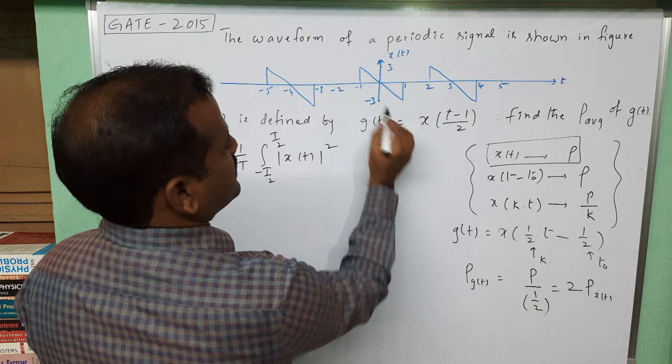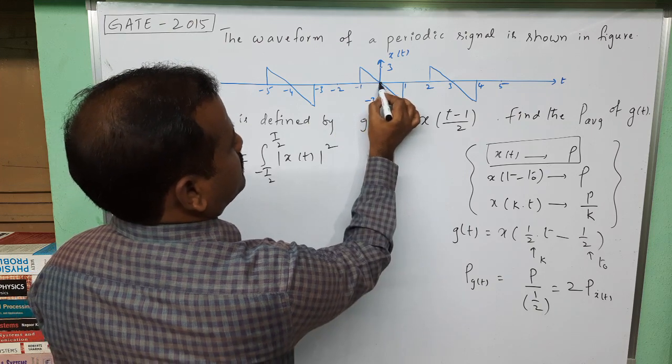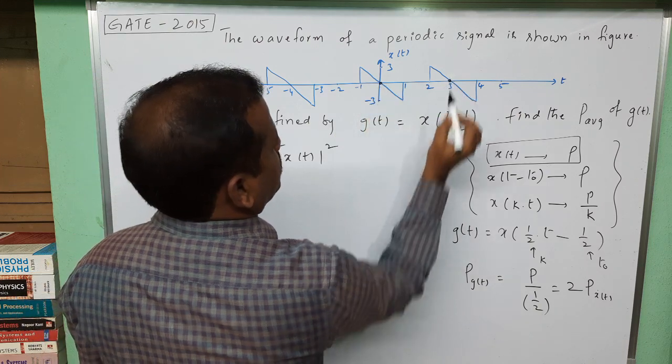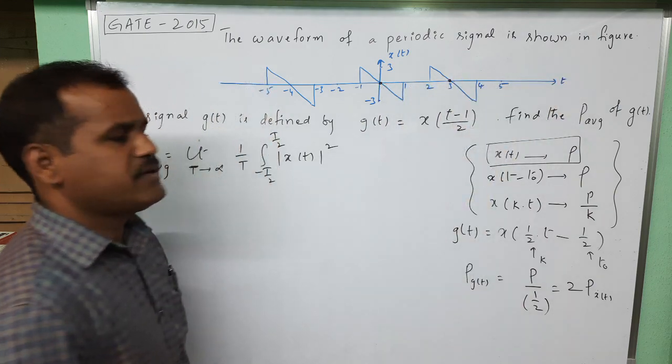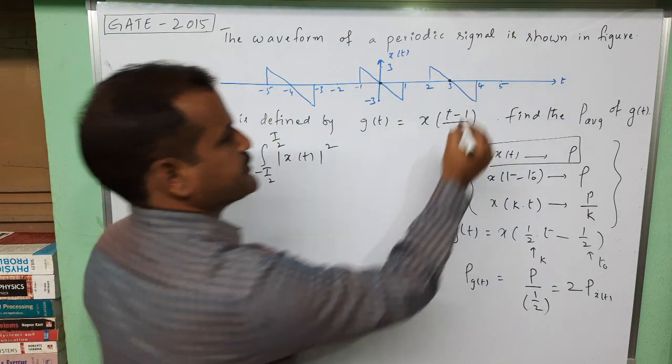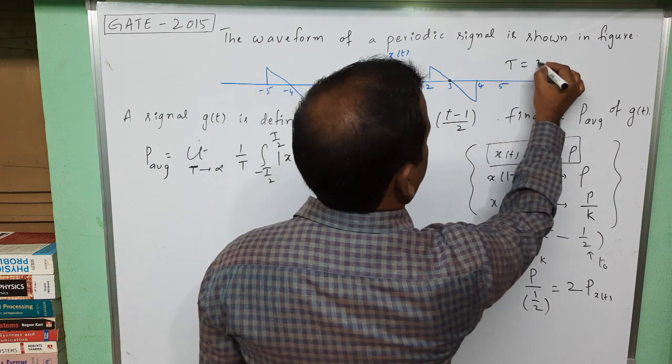Here what is the time period of the given signal? This signal repeats over this cycle, which is the time period. That means 3 is the time period here, so T value is 3.